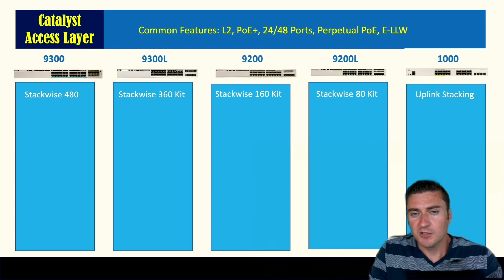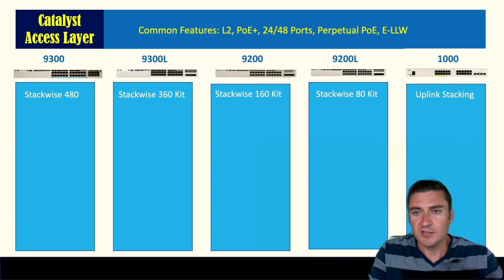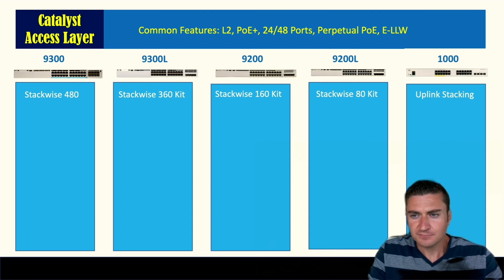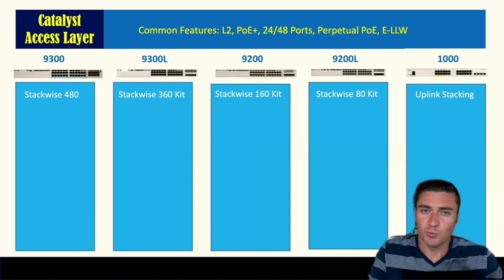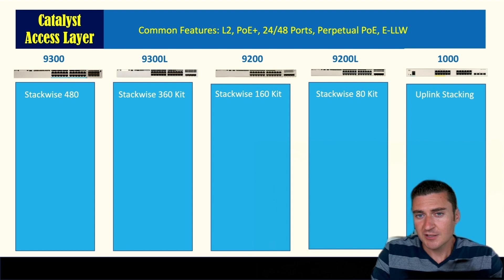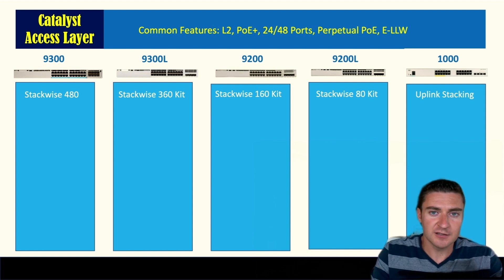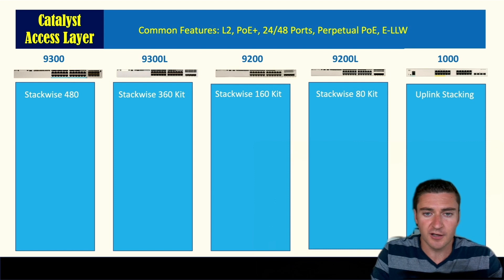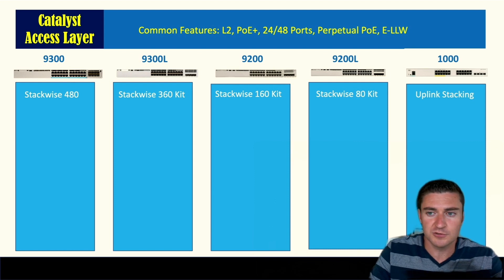The 9200 is StackWise 160 — 160 gig on the backplane — and you need the kit. The 9200L is StackWise 80 at 80 gig, and you also need the kit. The Catalyst 1000 does not have backplane stacking, but you can stack it via uplinks. Since it has static uplinks only, if you plan to stack it, you'll want the 10-gig uplink variation rather than the 1-gig variation.